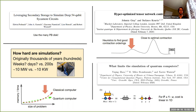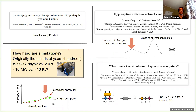Our original time estimate was years; the supplement mentioned tricks that could bring it to about 100 years; these follow-up works bring it to weeks or days. This is still orders of magnitude larger than the 200 seconds the quantum computer took. These classical simulations also require the world's largest supercomputer consuming 10 megawatts of power, compared to about 10 kilowatts for the Sycamore chip and its refrigerator — a three-order-of-magnitude power advantage on top of the time advantage.